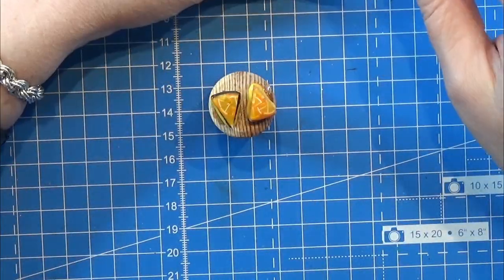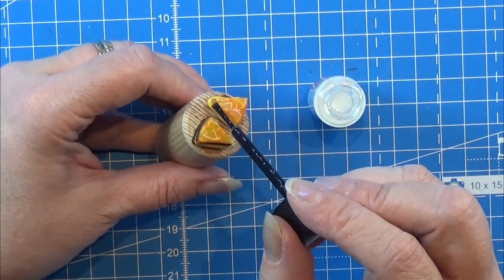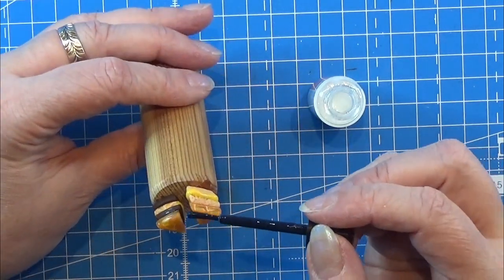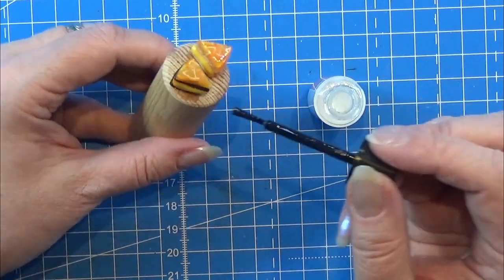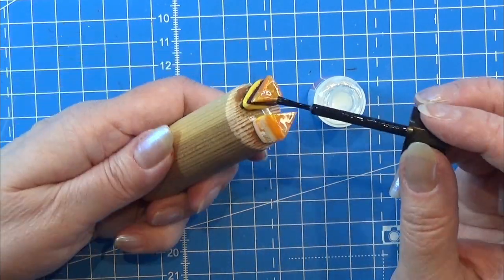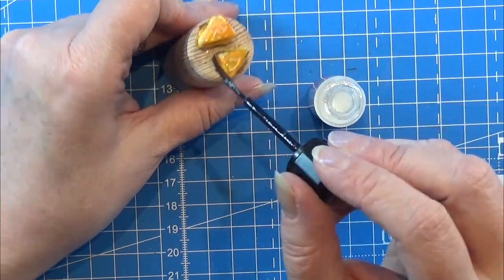Well actually I did use my Fimo liquid glaze here. And I glazed this top layer of resin to make it really shiny before I continued. Leave that to dry.